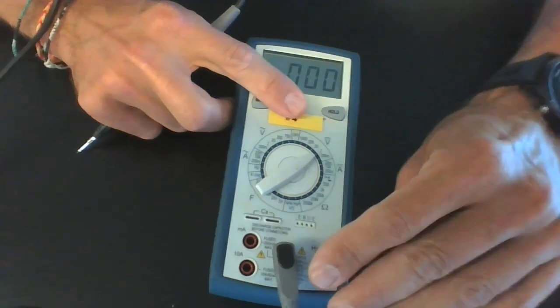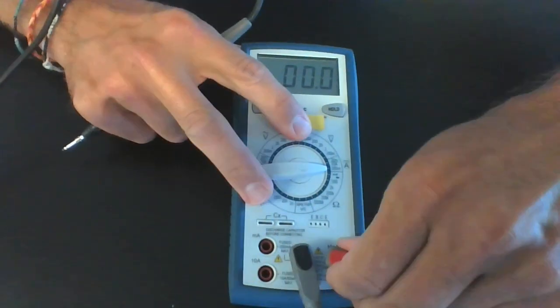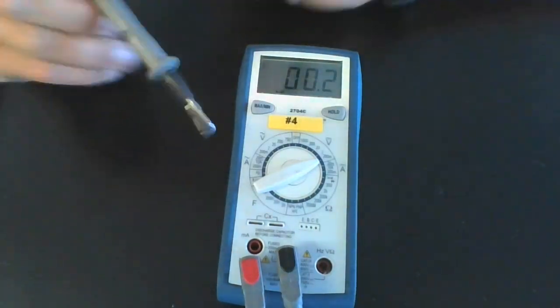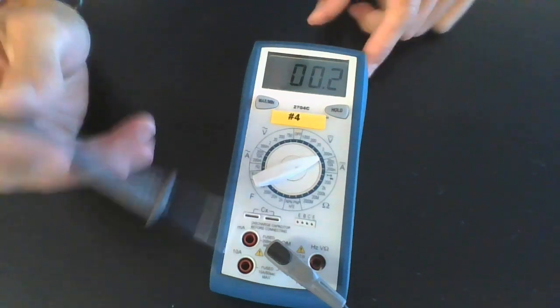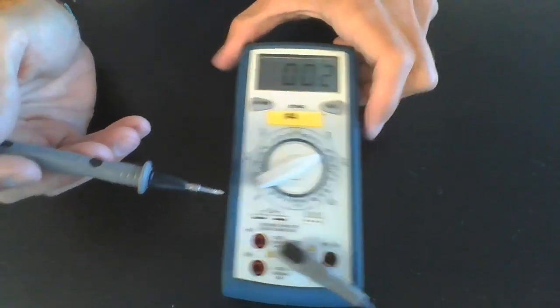Now, last thing here is if you ever hear something like this. This is the multimeter telling you, wait a second. You cannot take a measurement because your settings are incorrect, and you're going to fry me.